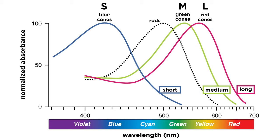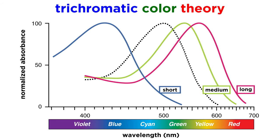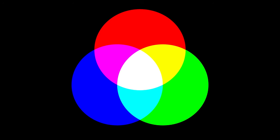To get even more specific with cones, there are three cone types: red, green, and blue, which are also called L, M, and S, standing for long, medium, and short wavelength. Trichromatic color theory explains how differential activation of these three types is responsible for our perception of all colors. This is why a computer monitor can use only red, green, and blue pixels to represent any color.